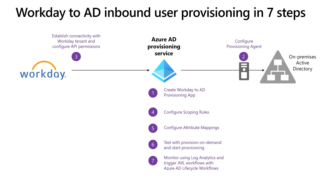In this video, we will walk through the seven-step process to deploy HR-driven provisioning from Workday to your on-premises Active Directory. If you don't have an on-premises Active Directory and want to provision cloud-only users directly to Azure AD, you can still follow along. We will call out steps that you can skip if your target is Azure AD.